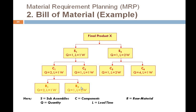C4 requires 4 units in quantity and one week lead time. To make C1, raw materials R1 and R2 are required. R1 needs 2 units in quantity and one week lead time. R2 requires 1 unit in quantity and a lead time of 2 weeks. C4 is also made using R1 — the same R1 used for C1 — with a quantity of 2 and one week lead time.